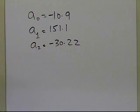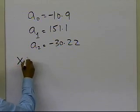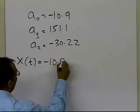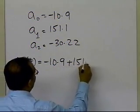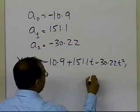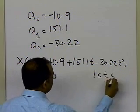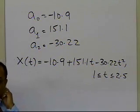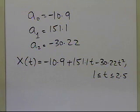So the location as a function of time is x(t) = −10.9 + 151.1t − 30.22t², valid for 1 ≤ t ≤ 2.5. Whenever you write an interpolant, it is very important to state the domain in which it is valid, because going outside that domain is extrapolation, not interpolation.